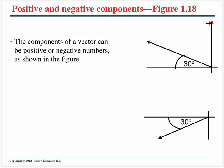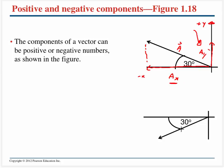One thing we have to pay close attention to is direction. Consider a vector pointing into the second quadrant: ax is in the negative x direction, so ax is actually negative. For a vector pointing into the third quadrant, both ax and ay would be negative, because we define the right as positive x and up as positive y.